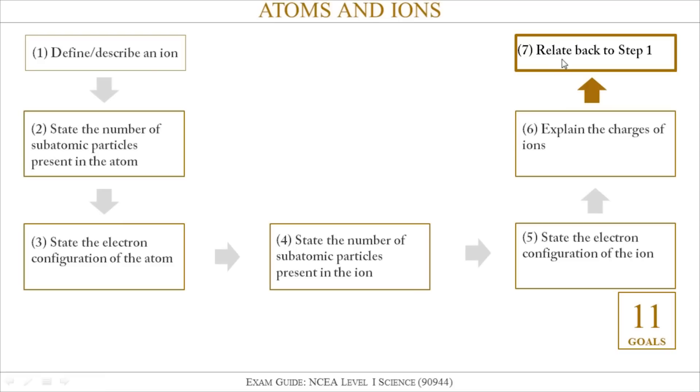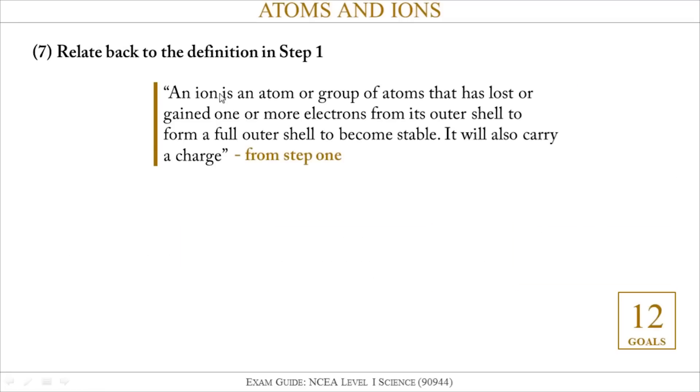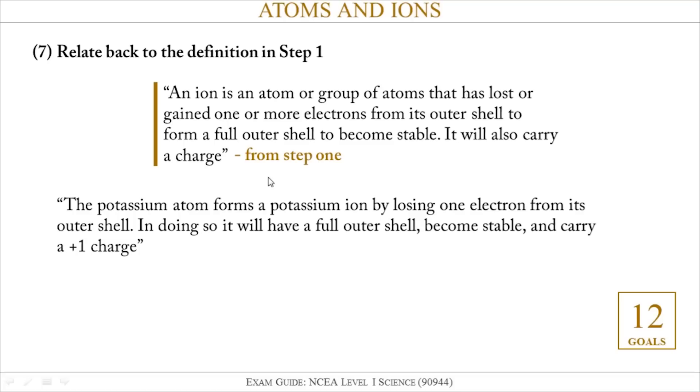Last thing I'm going to do is to relate everything that I've written back to step one which is to define or describe an ion. Just to recap, in step one we gave our definition of what an ion is. I'm going to take that definition and make it fit into my example for potassium. We said that an ion is an atom or group of atoms that have lost or gained one or more electrons, so I'm going to say: when the potassium atom forms an ion by losing one electron, and our definition says it's going to form a full outer shell to become stable, so the next thing I'm going to write is that after it's lost that one electron it will have a full outer shell, it will be stable, and it will carry a plus one charge.